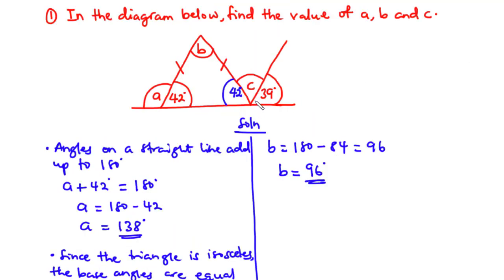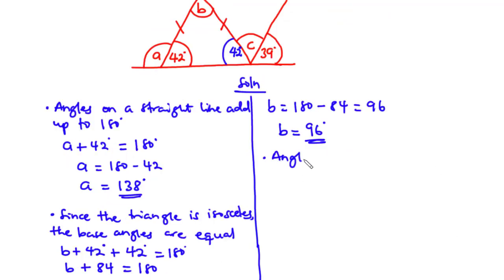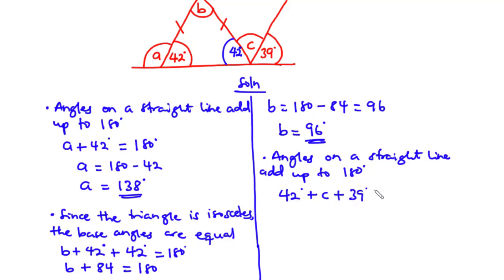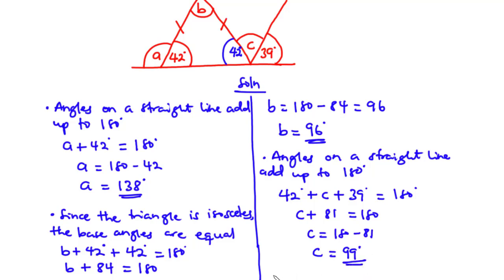Now let's find the value of C. Angles on a straight line add up to 180 degrees, therefore 42 plus C plus 39 equals 180. So C equals 180 minus 81, giving C equals 99 degrees. Therefore A equals 138 degrees, B equals 96 degrees, and C equals 99 degrees.